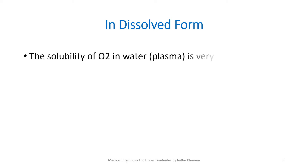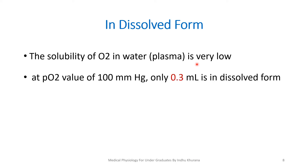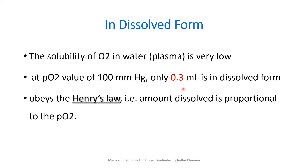Moving on to the second major form, which is the dissolved form — only 2% of oxygen is present in the dissolved form. This is because the solubility of oxygen in the water of plasma is very low. At a partial pressure of 100 mmHg, only 0.3 ml is in the dissolved form. It obeys Henry's law: the amount dissolved is proportional to the partial pressure of oxygen, so if PO2 is more, more oxygen will be in the dissolved form.